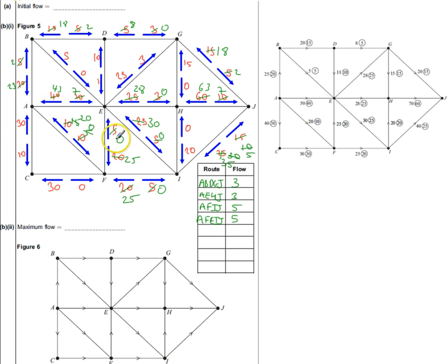Let me check if it's saturated. A, F, E, I, J, I can do that one. That has a potential increase of 5, so I want to reduce my potential increases by 5. That goes down to 0, that goes down to 0, that goes down to 0, and that goes down to 5. Then I'll increase all of these by 5, so that becomes 20, 25, 20, 30, and 35.